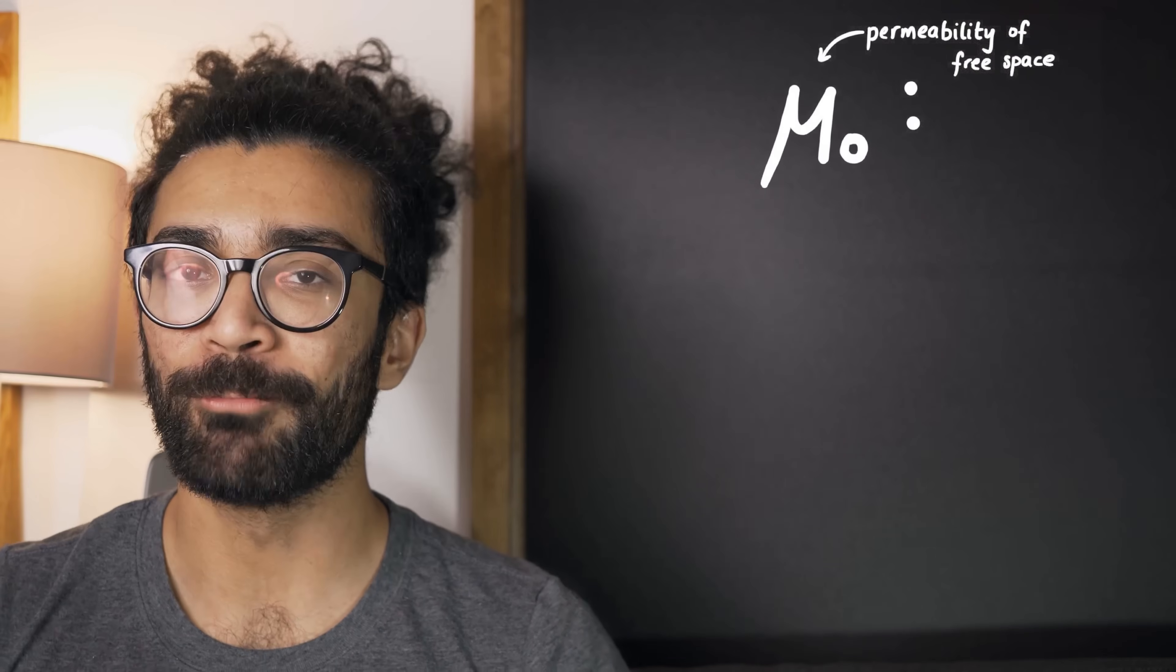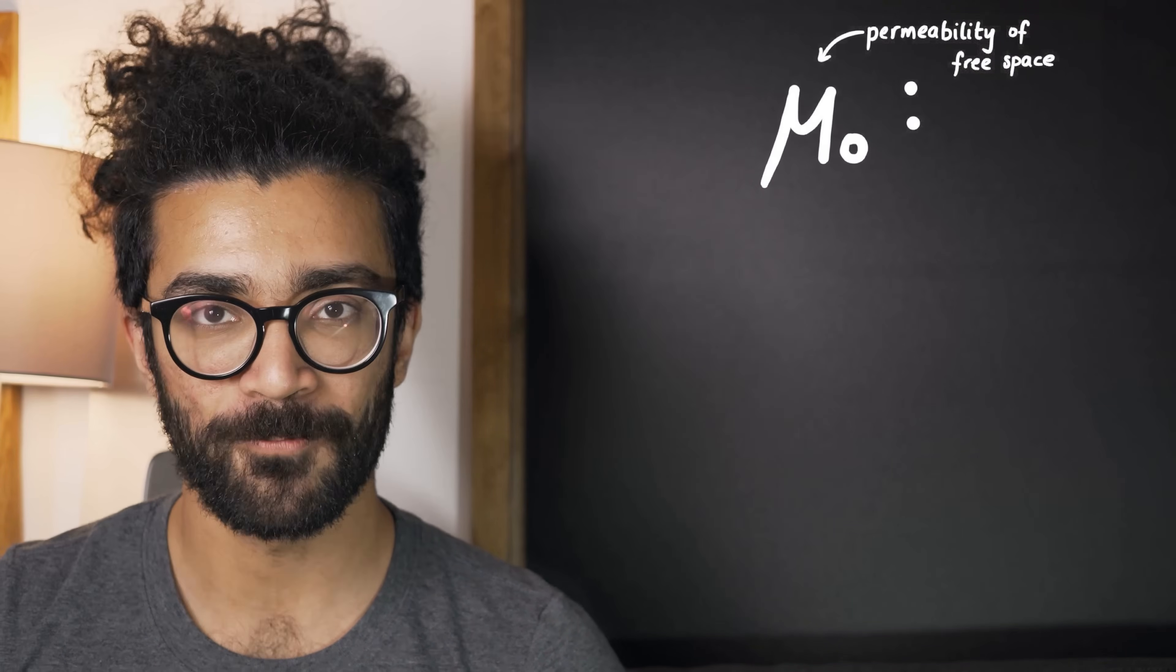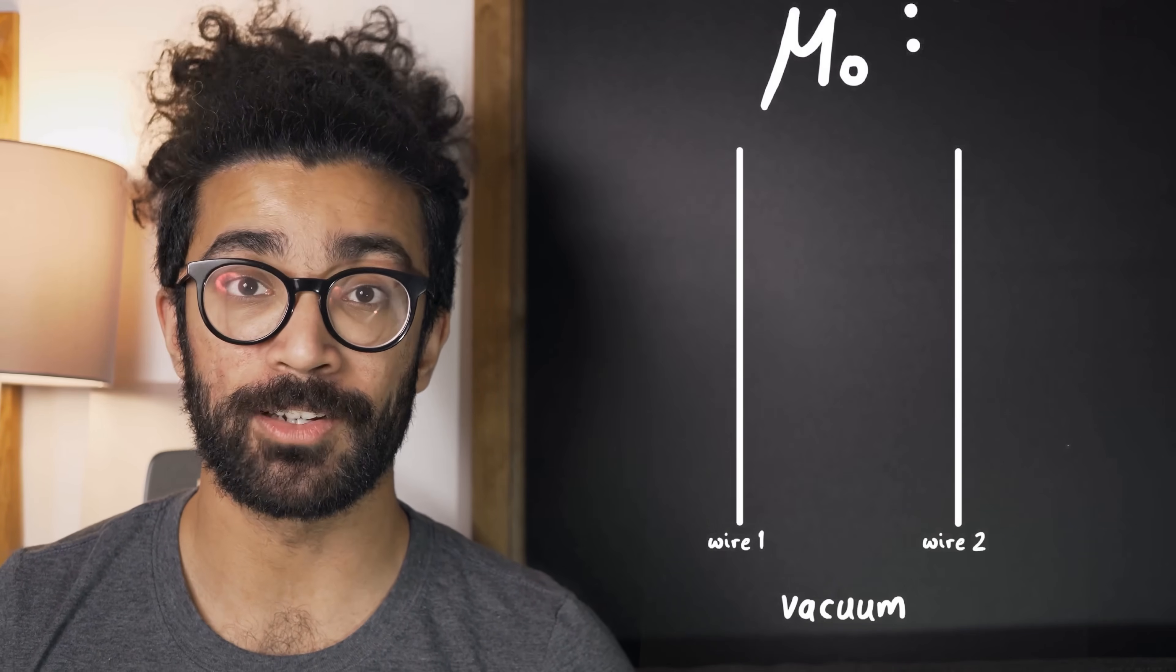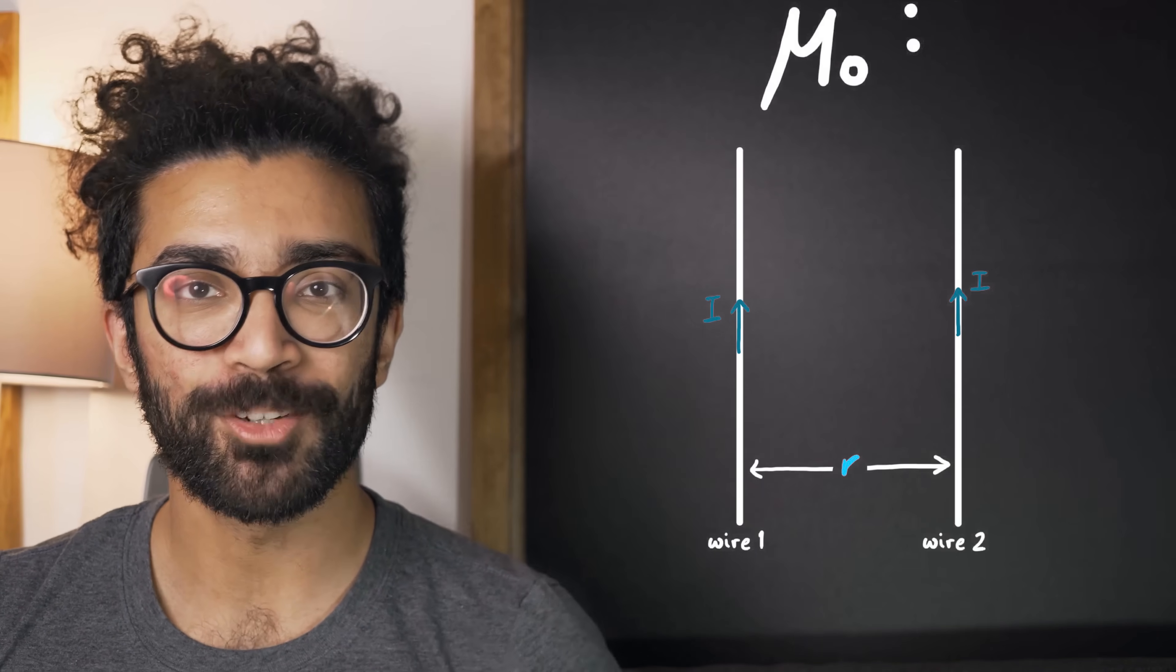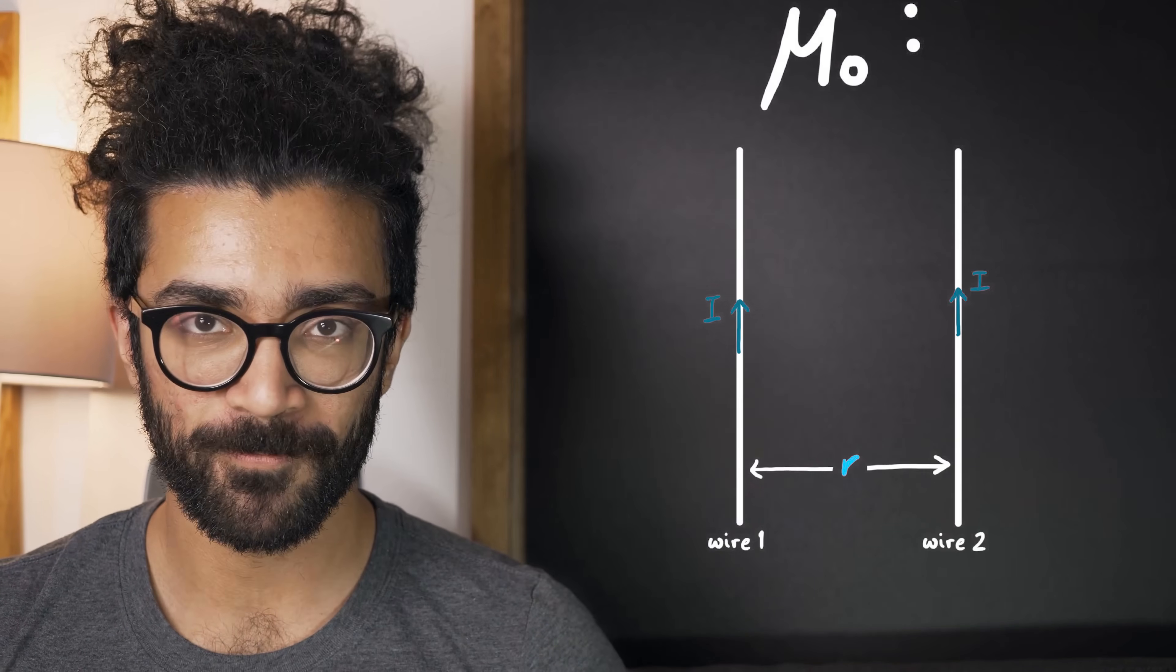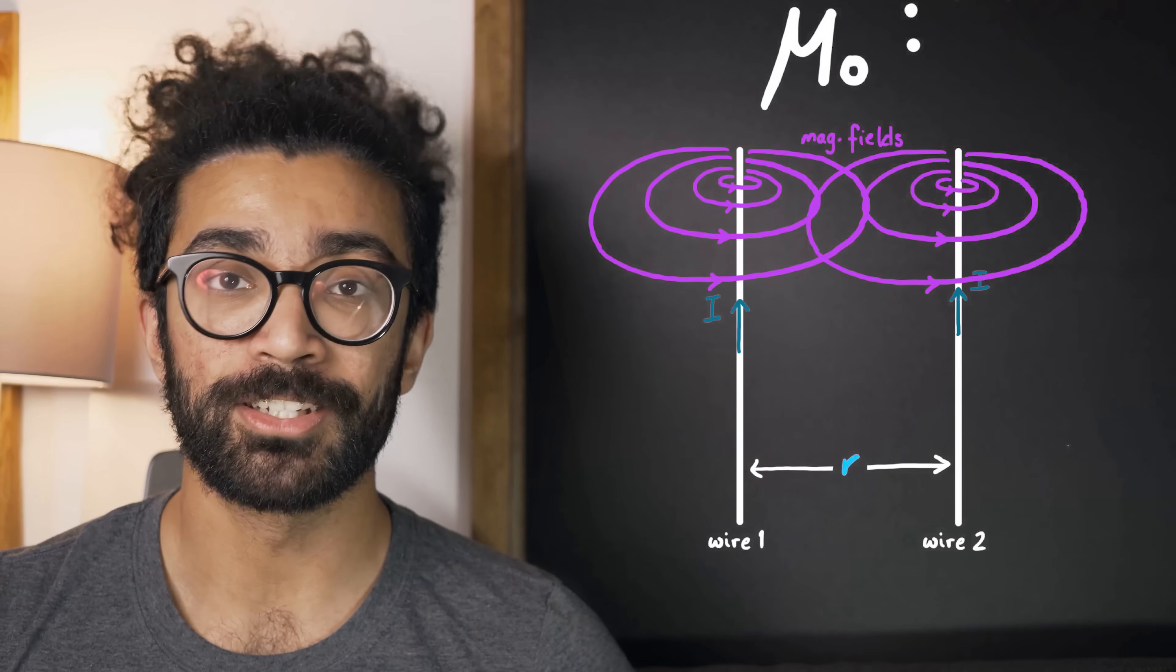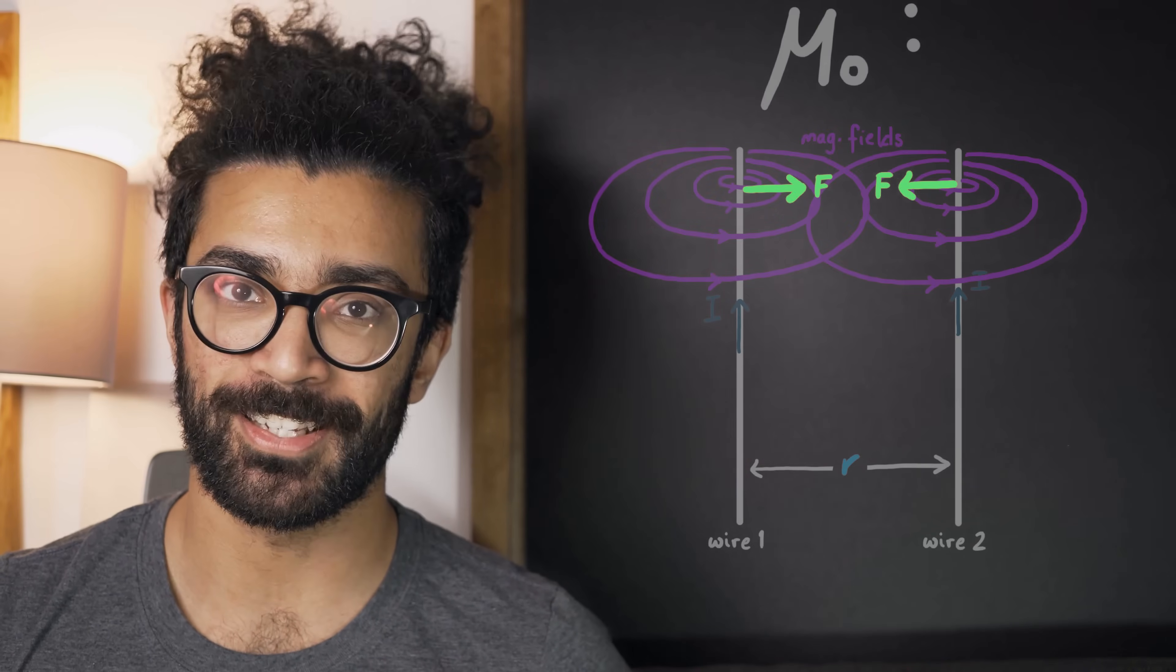Similarly, mu 0, the permeability of free space, determines how magnetic fields behave in a vacuum. If we imagine two current carrying wires, each of which carries a current i, and they're separated by a distance r in a vacuum, then we can use this as a convenient way of understanding mu 0. This is because current carrying wires generate their own magnetic field, which in turn exerts a force on moving charges, such as the moving charges in the other wire.